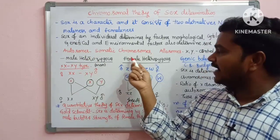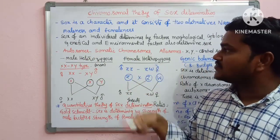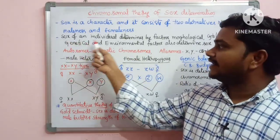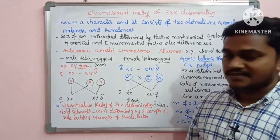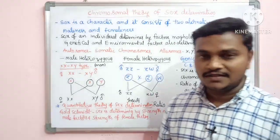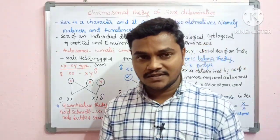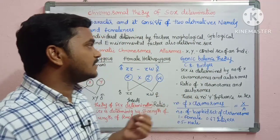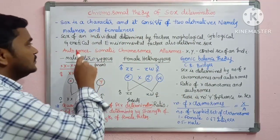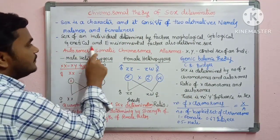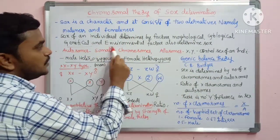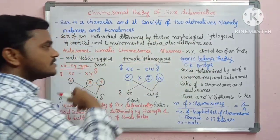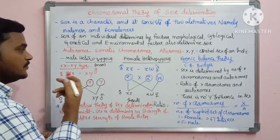Autosomes are somatic chromosomes and allosomes are sexual chromosomes. So we have different types of factors — genetical factors and environmental factors — that determine the sex of an individual.